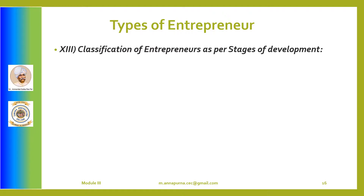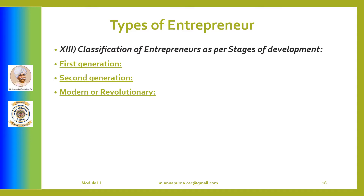The next set of entrepreneurs are classified based on stages of development, with four types. First generation entrepreneurs start an industrial unit by their innovative skills, essentially being innovators who combine different technologies to produce a marketable product or service. Second generation entrepreneurs inherit family business firms and pass it from one generation to another. Modern or revolutionary entrepreneurs undertake ventures which suit changing and current demands in the market. Classical entrepreneurs are concerned with customer and marketing needs through the development of a self-supporting venture, aiming to maximize returns at a consistent level with the survival of the firm.